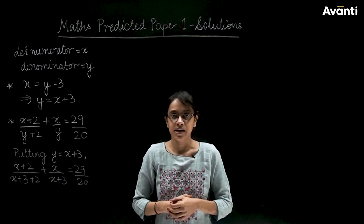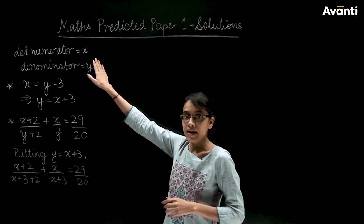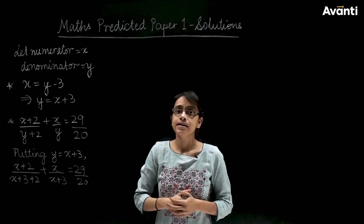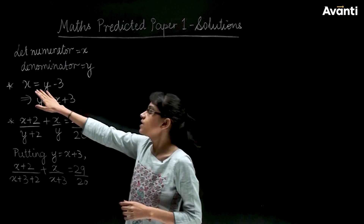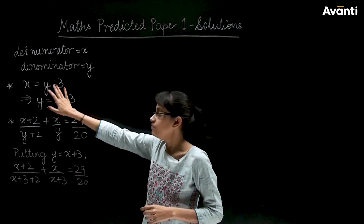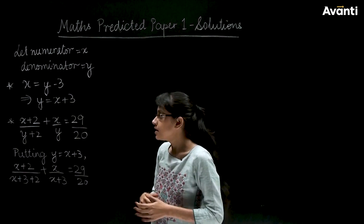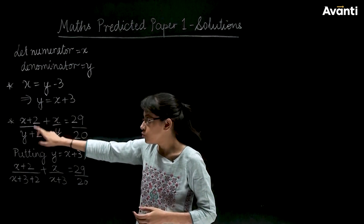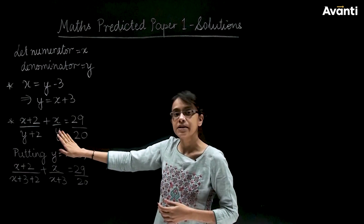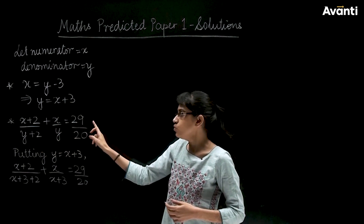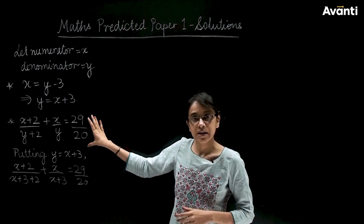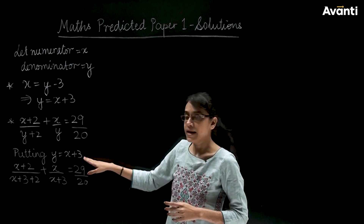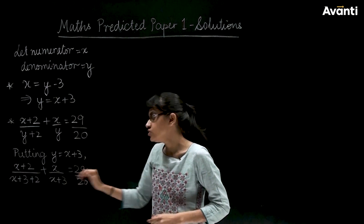In the second question, we are given a fraction. We assume the numerator is x and the denominator is y, so the fraction is x upon y. The numerator is 3 less than the denominator, which gives us y equals x plus 3. The second condition is that if we add 2 to the numerator and denominator and add this with the original fraction, the sum equals 29 upon 20. We write this in equation form, substitute y equals x plus 3, and the equation has only one variable, x.